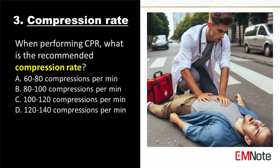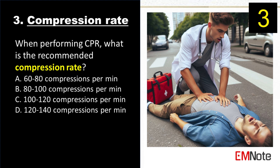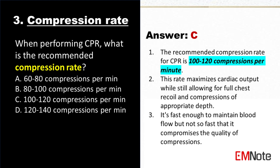When performing CPR, what is the recommended compression rate? The answer is C: 100 to 120 compressions per minute. The recommended compression rate for CPR is 100 to 120 compressions per minute. This rate maximizes cardiac output while still allowing for full chest recoil and compressions of appropriate depth.